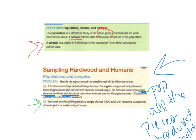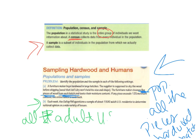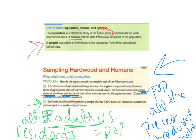Each week, the Gallup poll questions a sample of about 1,500 adult U.S. residents to determine national opinion on a wide variety of issues. The population here is all adult U.S. residents — that 'adult' is a key word because we're not talking to kids. The sample would be these 1,500 adult U.S. residents that they speak to.